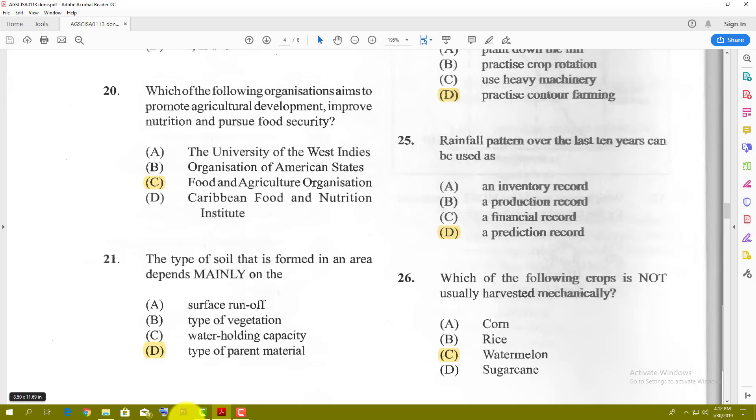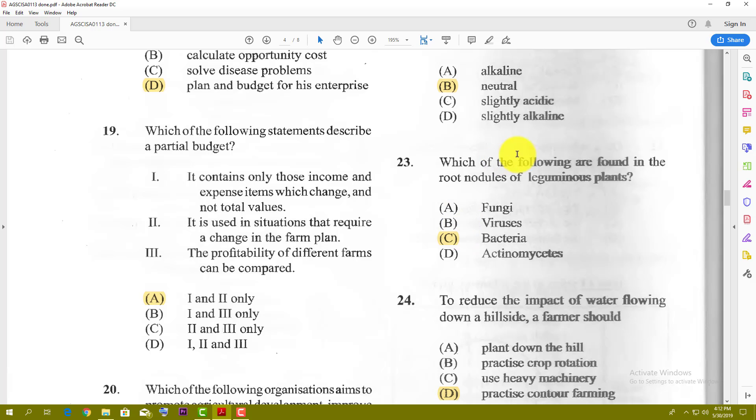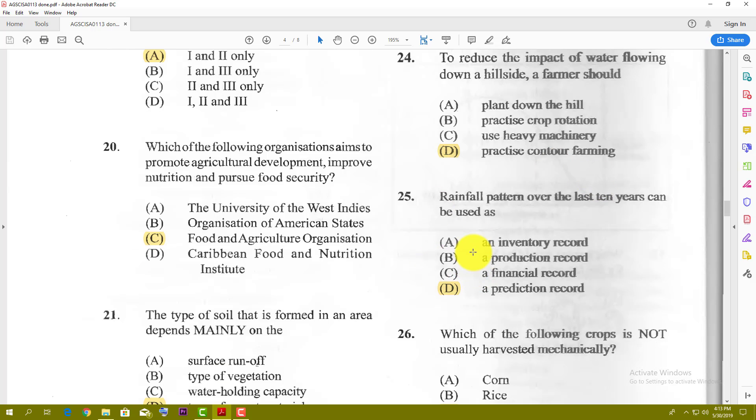Number twenty-two: a soil sample taken from Miss Ali's farm shows a pH reading of 7.0. This soil is said to be neutral. Seven on the pH scale is neutral. Number twenty-three: which of the following are found in the root nodules of leguminous plants? The answer is B, the nitrogen-fixing bacteria. Nitrogen-fixing bacteria are found on the roots of leguminous plants. Number twenty-four: to reduce the impact of water flowing downhill, a farmer should practice contour farming. That's where you plow your land across the contours of the hill to reduce some of the flow of water.